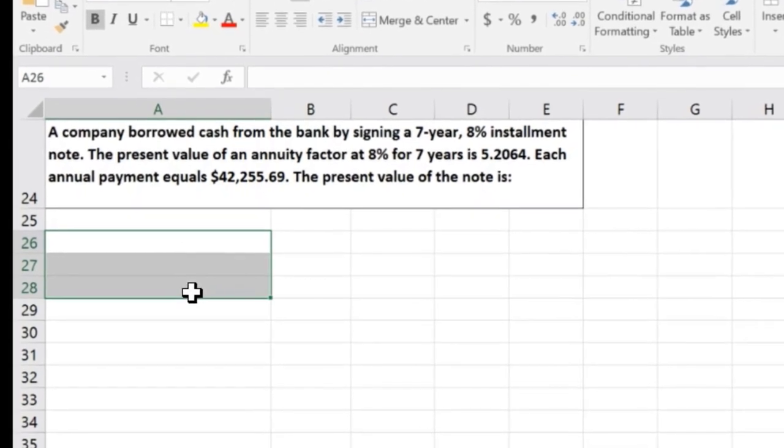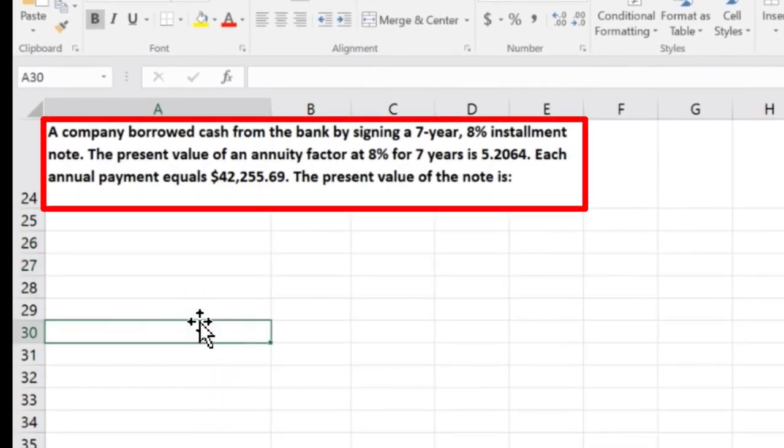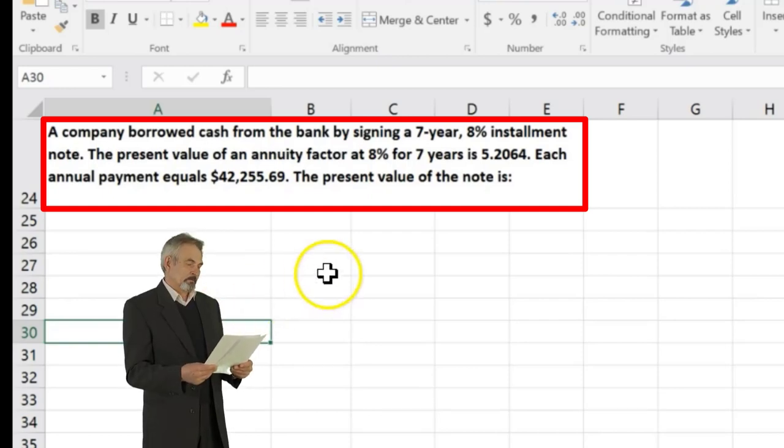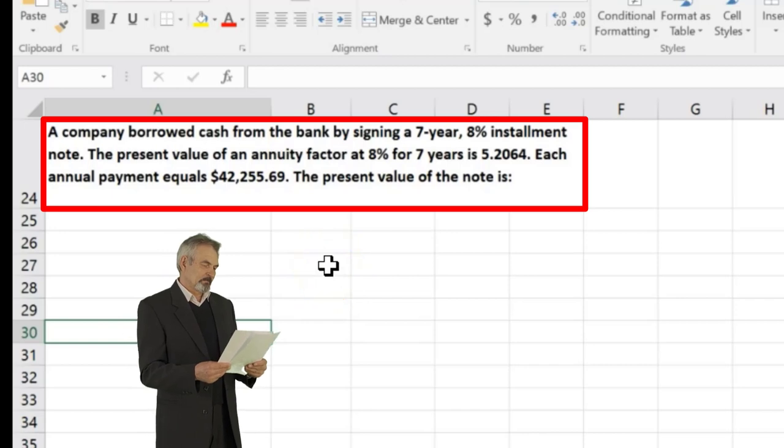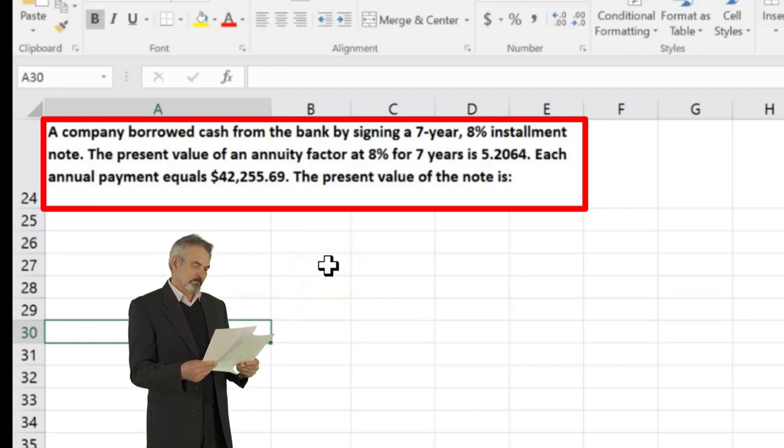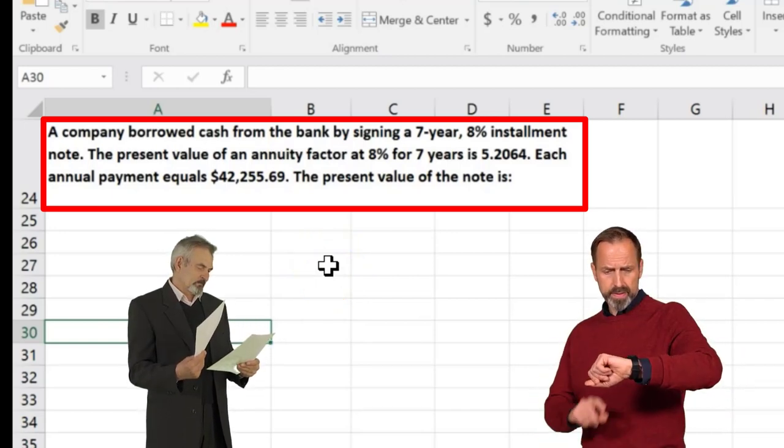Next one says a company borrowed cash from the bank by signing a seven year, 8% installment note. The present value of an annuity factor at 8% for seven years is 5.2064. Each annual payment is $42,255.69.